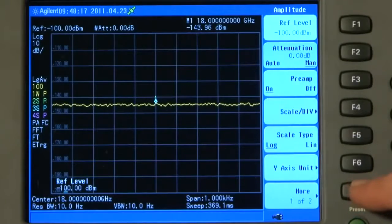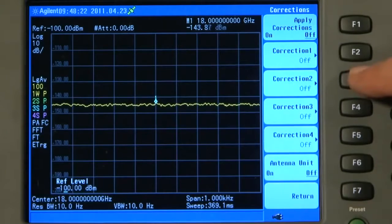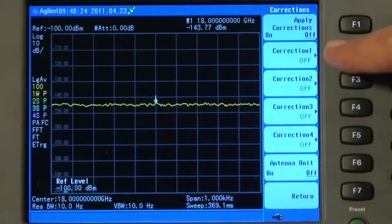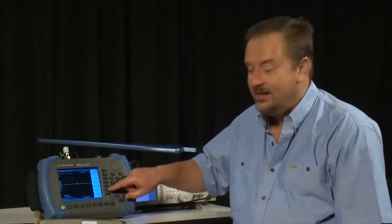I simply press Return, press More, press Correction. And here you can see a range of correction factor tables can be stored, which we can turn on, and then turn on the antenna units to display in true field strength.